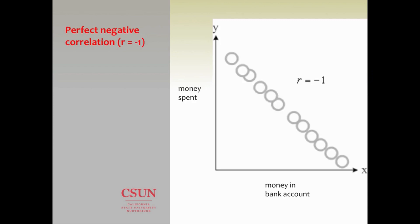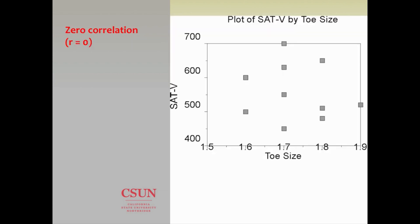As you spend more money, you lose money in your bank account — that's a perfect negative correlation. As money spent increases, money in your bank account decreases. That's your perfect negative one correlation.